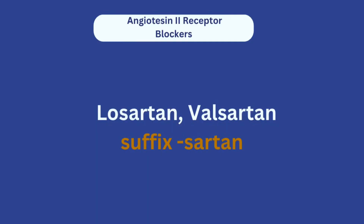So ACE inhibitors stop Angiotensin 1 from being converted to Angiotensin 2, and if Angiotensin 2 is still present, Angiotensin 2 Receptor Blockers stop it from binding to its receptors and increasing blood pressure. It is that simple. Examples of drugs that fall under Angiotensin 2 Receptor Blockers are losartan and valsartan. They all have the suffix '-sartan', which is a way to remember drugs in this class.